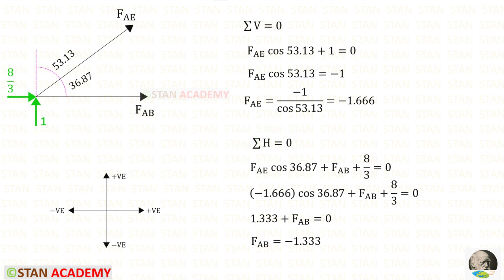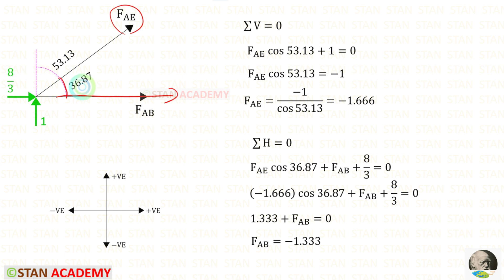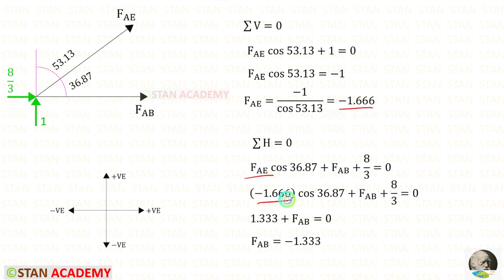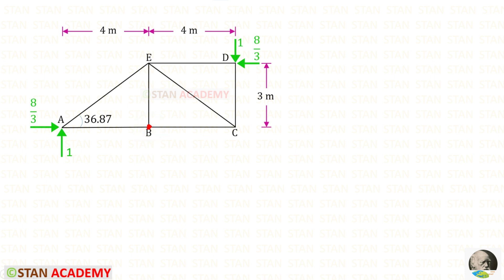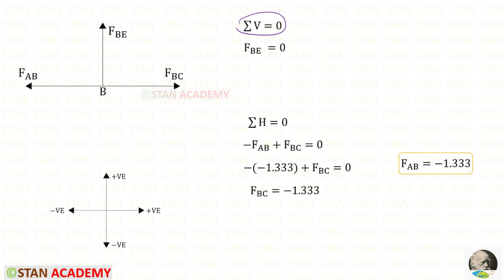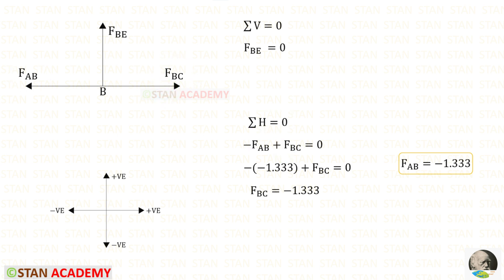Applying Sigma H = 0 at joint A: HA and FAB both act towards the right (positive). Resolving FAE horizontally requires multiplying by cos 36.87° (positive, acting right). Substituting the value of FAE, for FAB we get −1.333. Taking joint B and applying equilibrium, FBE = 0. Applying the horizontal rule: FAB acts left (negative), FBC acts right (positive); substituting the known value of FAB (negative × negative = positive), for FBC we get −1.333.